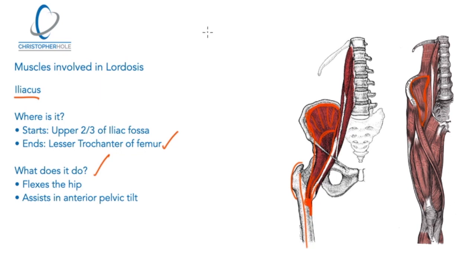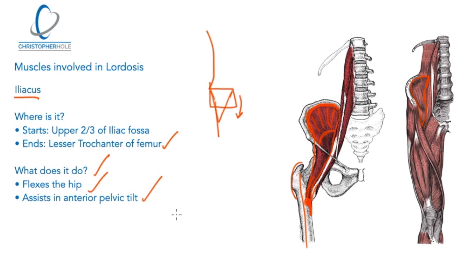When this muscle becomes tight, it pulls on the pelvis because it doesn't attach to the spine. So it isn't going to directly create an exaggerated curve in the spine — it may do so indirectly by tilting the pelvis down, which then assists in the exaggerated curve. What it does is flex the hip and assist in the anterior pelvic tilt. Those are the first two muscles: psoas and iliacus, which together can be known as the iliopsoas.